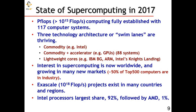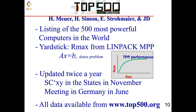AMD follows with about 1%. So the x86 instruction set is used in 93% of the 500 fastest computers, which I think is just incredible. Moving on, the data for the last 24 years has been collected at top500.org — this list goes by the name of the Top 500 supercomputers.